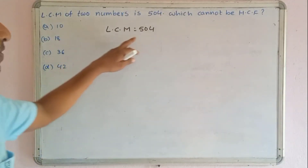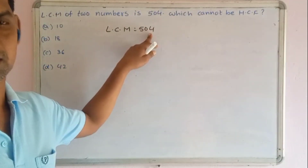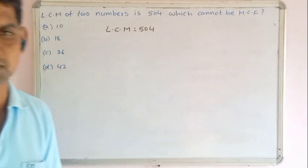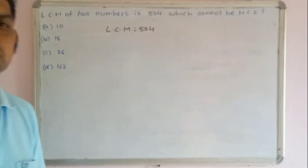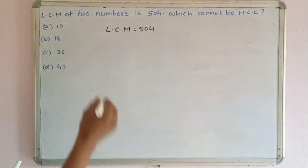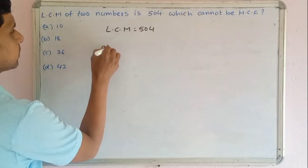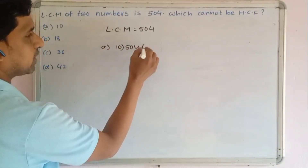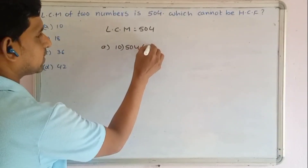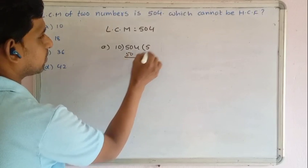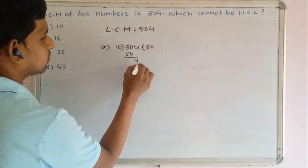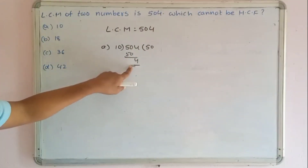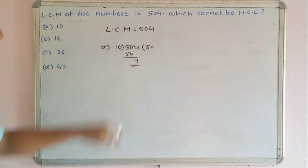Checking option A: 504 divided by 10. The remainder is 4, so 10 is not a factor of 504. Therefore 10 cannot be the HCF.